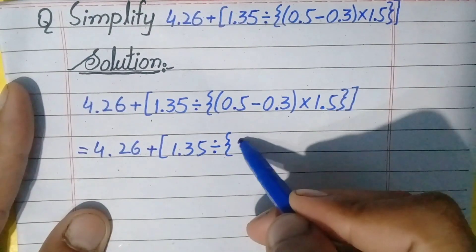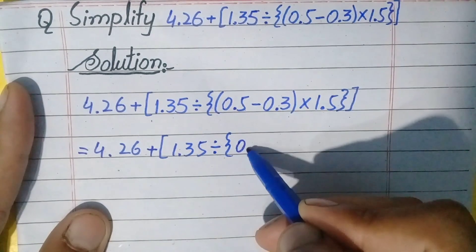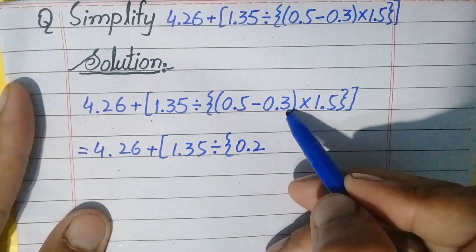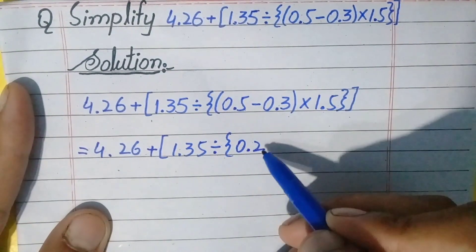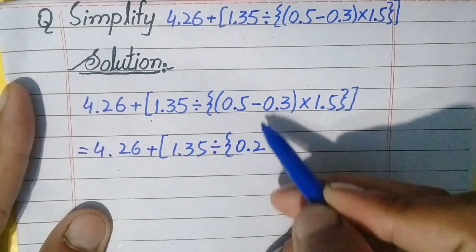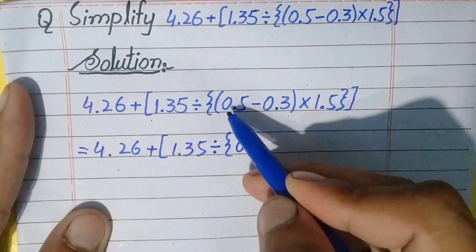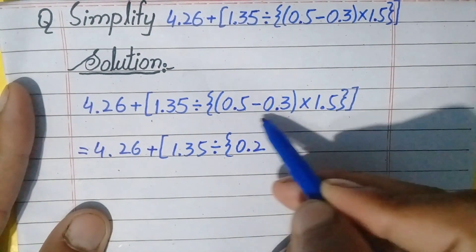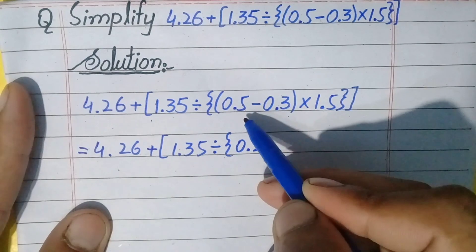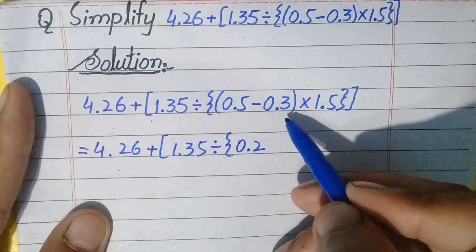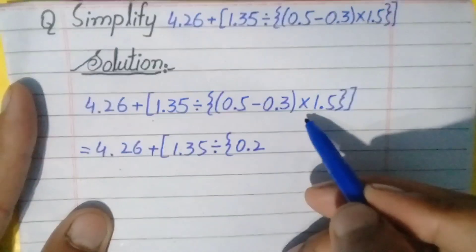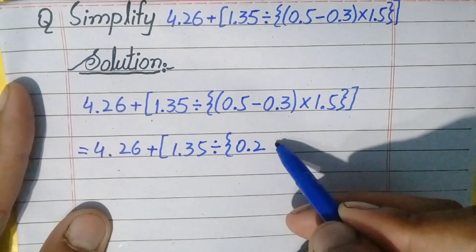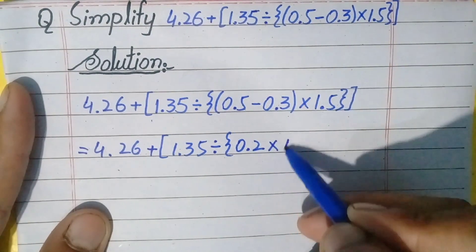When we subtract 0.3 from 0.5 it gives 0.2, because subtracting 3 from 5 gives 2, and 0 minus 0 gives 0. So 0.2 is the answer of the numbers inside the parenthesis. Write down the remaining part the same: multiply 1.35, braces close, square brackets close.